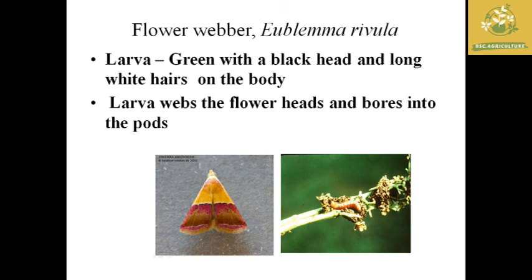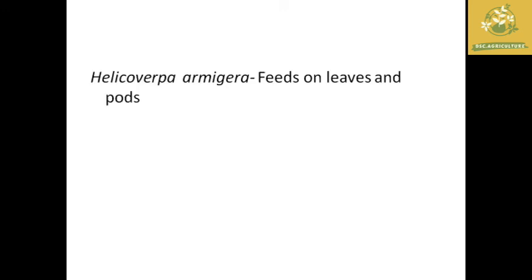The next pest is the flower webber, with scientific name Eublamma rivula. The larva is green with a black head and long white hairs on the body. The major characteristic symptom is that the larvae web the flower heads together and bore into the buds.